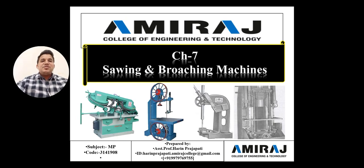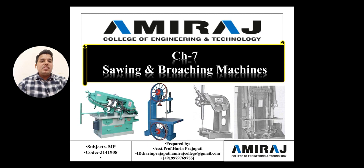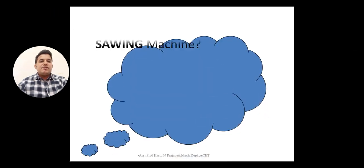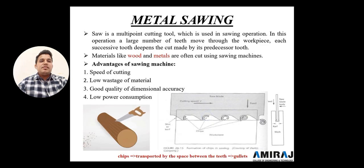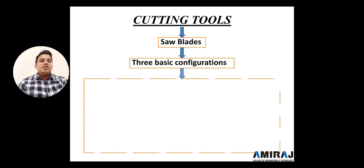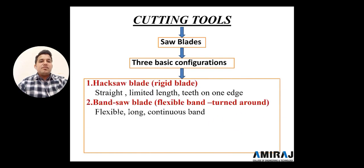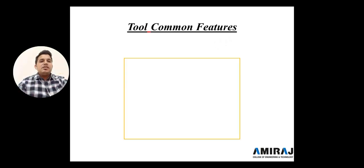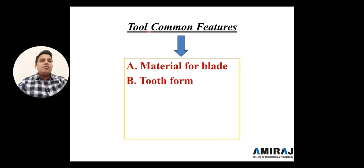Hello friends, today we meet again for chapter number seven: sawing and branching machines. Last time we covered some important things regarding sawing. Let's recall: first, the sawing definitions, then the main principle of sawing, cutting tools, and three types of cutting tools.